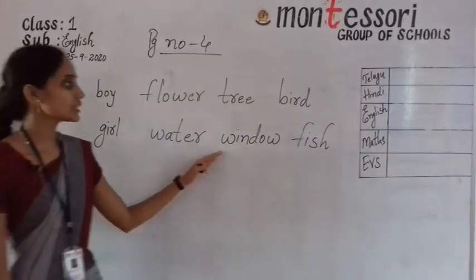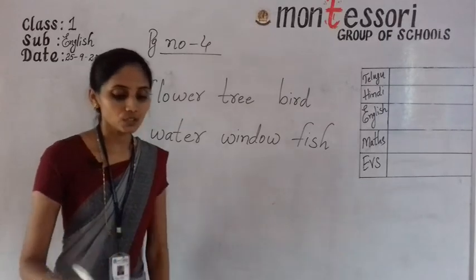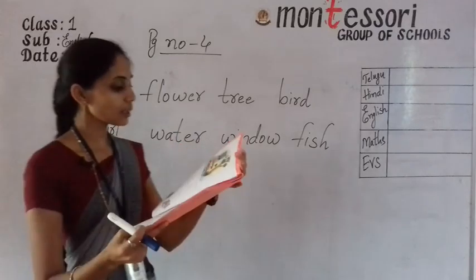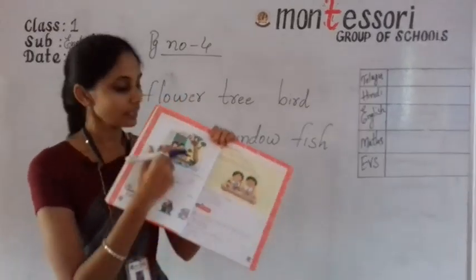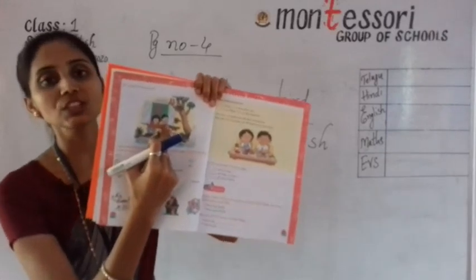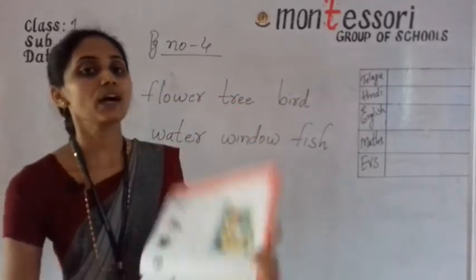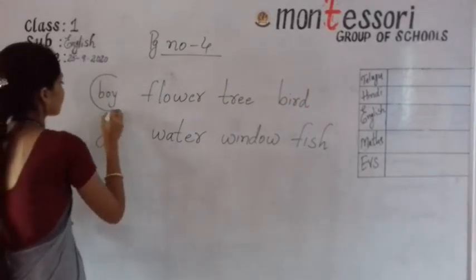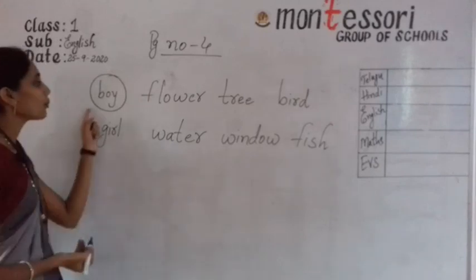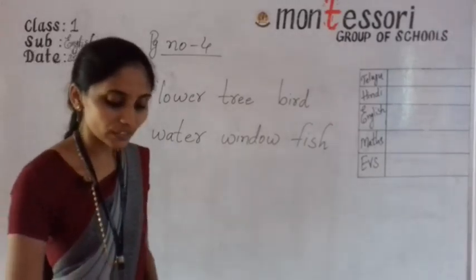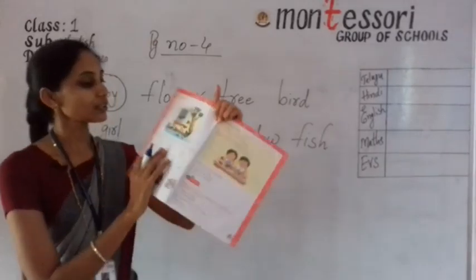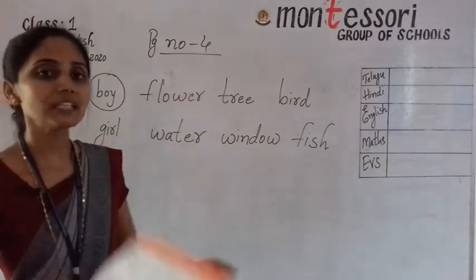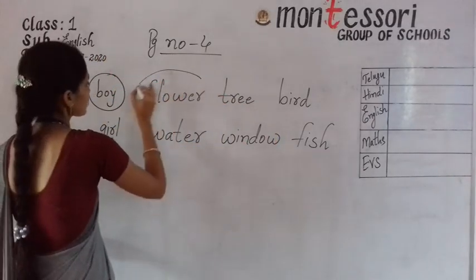These are the words given under that picture. First word: boy. Can you see the boy in that picture? Yes, we can see the boy in this picture. Circle that word with pencil — B-O-Y, boy. Next word is flower. Can you see the flower in that picture? Yes, we can see the flowers. Circle this flower.